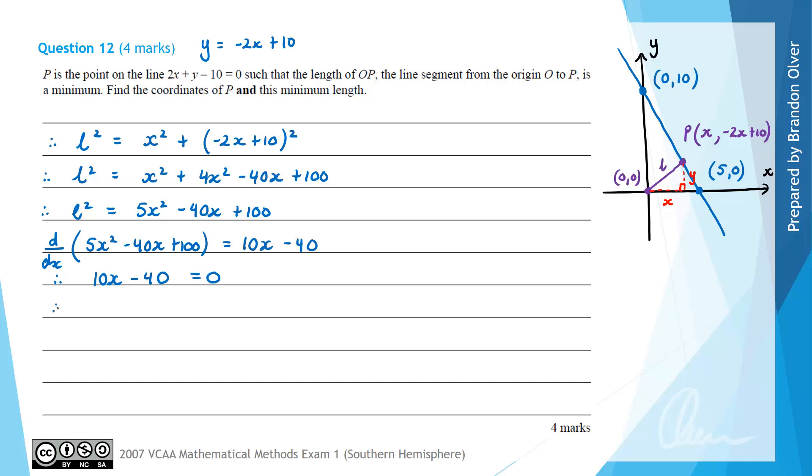And solving for that, we get 10x equals 40. So therefore, x equals 4. So next we can substitute this x value into our equation. So y equals minus 2 times 4 plus 10, which equals 2, which gives the coordinates of the point P, being x is 4, y is 2. So that is the first part to this answer.